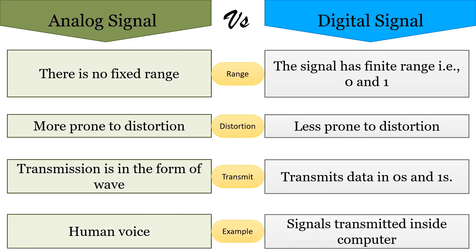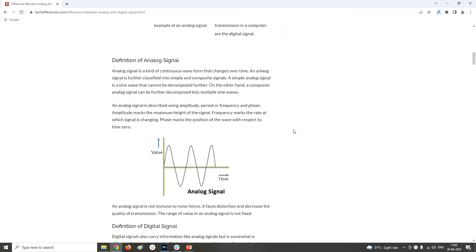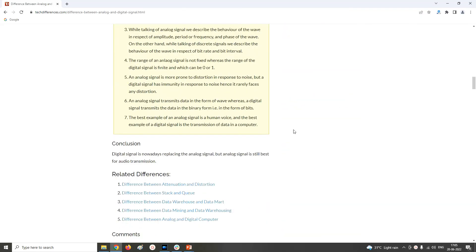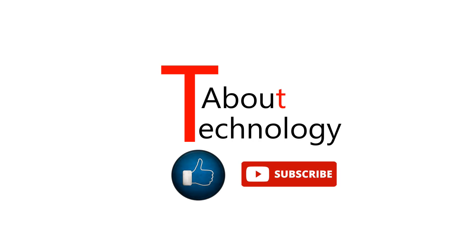Best example of analog signal is human voice, whereas best example of digital signal is transmission of data in computers. So this is all about analog signals, digital signals, and differences between them. For more details, you can refer to our official website techdifferences.com. I have provided the URL in the description below. Please like and share this video with your friends and family, and don't forget to subscribe to our YouTube channel About Technology. Keep checking the channel for further updates and put your comments and queries in the section below. We will be back soon with a new video. Till then, take good care of yourself.